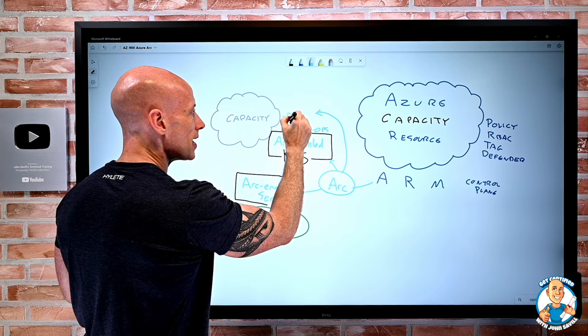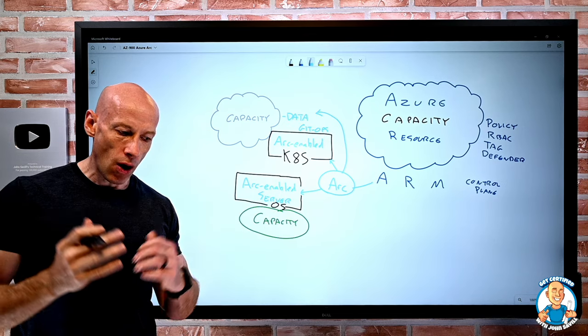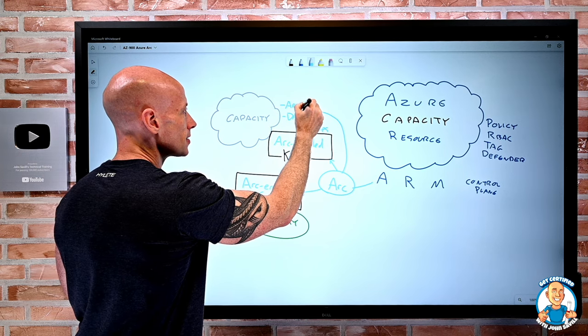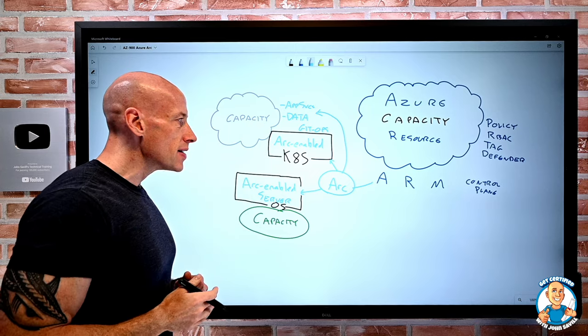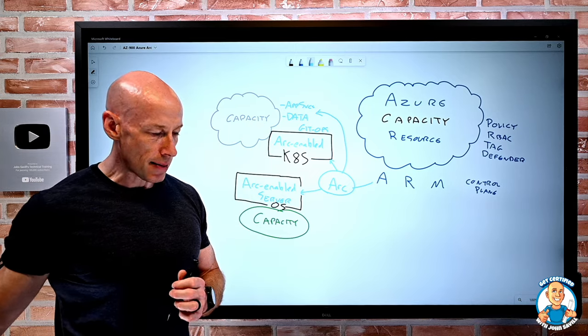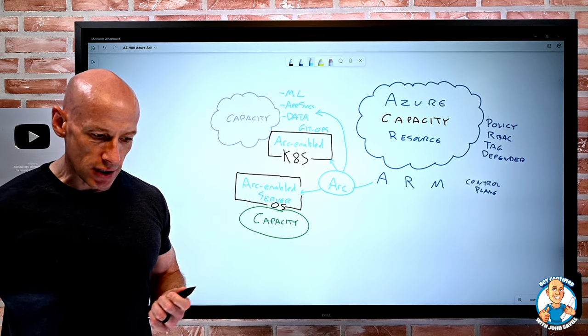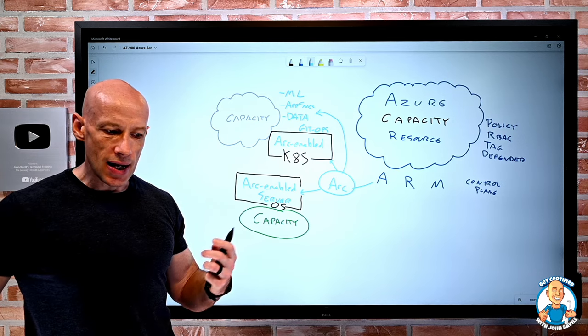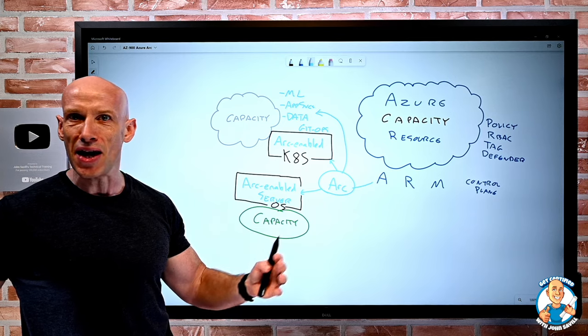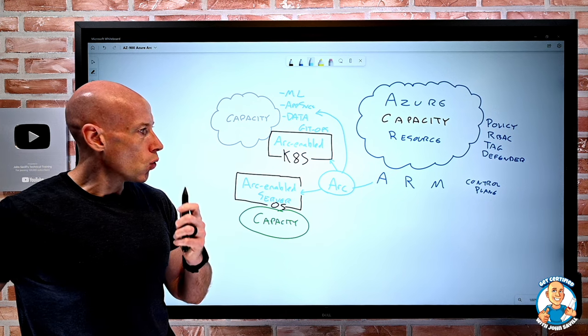There are Arc-enabled data services, SQL managed instance, PostgreSQL hyperscale. There are Arc-enabled app services. And once again, these all sit on top of this Arc-enabled Kubernetes, app services, functions, logic apps. There's also Arc-enabled machine learning for training, for inferencing. And these are actually constantly being added to. There's now VMware VM lifecycle, create VMs, start VMs, stop VMs, resize VMs, delete VMs. There's a whole set of solutions all around this.